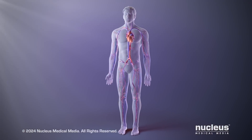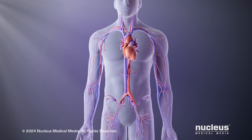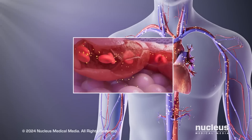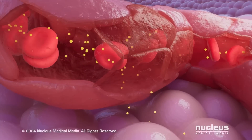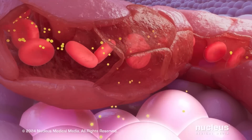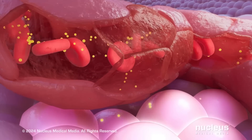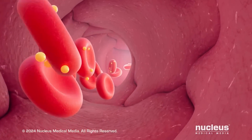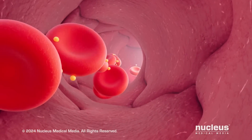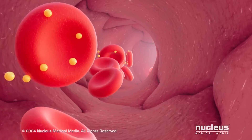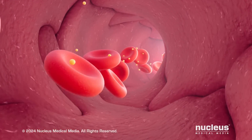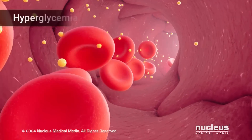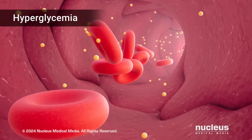Glucose in your blood can affect your red blood cells. After you eat, your body breaks down food into glucose and releases it into your blood. Your tissue cells take the glucose out of your blood and use it as their main source of energy. It's normal for some of the glucose in your blood to stick to the hemoglobin in your red blood cells. This process is called glycosylation. If your tissue cells aren't able to use the glucose, it can build up in the blood. This is called hyperglycemia.